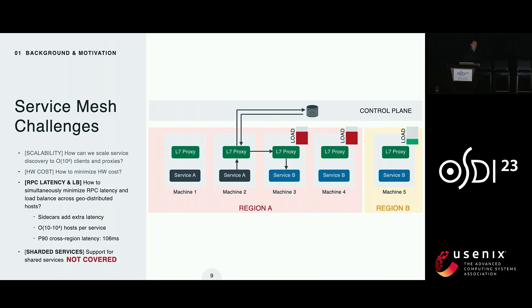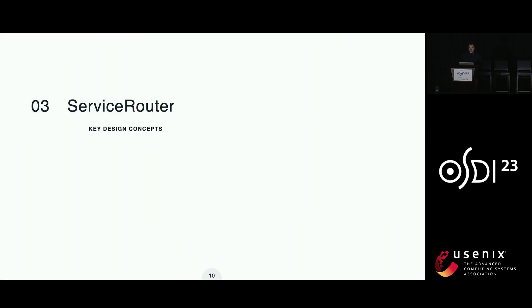There's also another major challenge not covered by existing service meshes: adding support for sharded services. At Meta, more than 65% of the RPC requests are actually due to sharded services, and Service Router has support for that — please take a look at the paper for those details. These challenges are addressed with Service Router as Meta's global service mesh. I'm going to use SR to refer to Service Router, and SR has been in production and evolving since 2012.